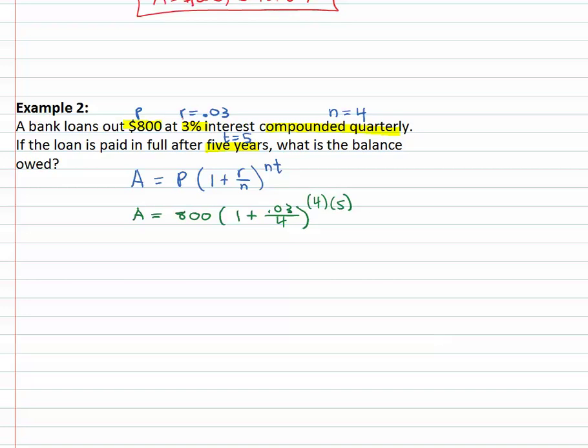Again, we can have the calculator do the hard work for us. First multiply the exponent, four times five is twenty, and then type everything in exactly like it looks, eight hundred times one plus point oh three, over four, all to the twentieth power. And we end up with nine hundred twenty-eight dollars and ninety-five cents for our final amount in the account for the loan payoff.